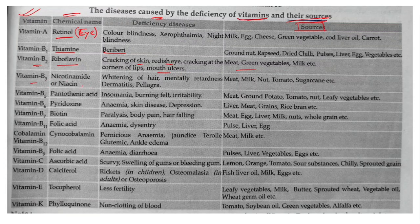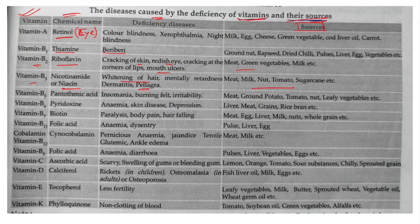Vitamin B3 is called Niacin or Nicotinamide. Deficiency causes whitening of hair, mental retardation, Dermatitis, and Pellagra. Sources include various foods. Vitamin B5 — Pantothenic acid — deficiency causes Insomnia, burning sensation, and irritability.